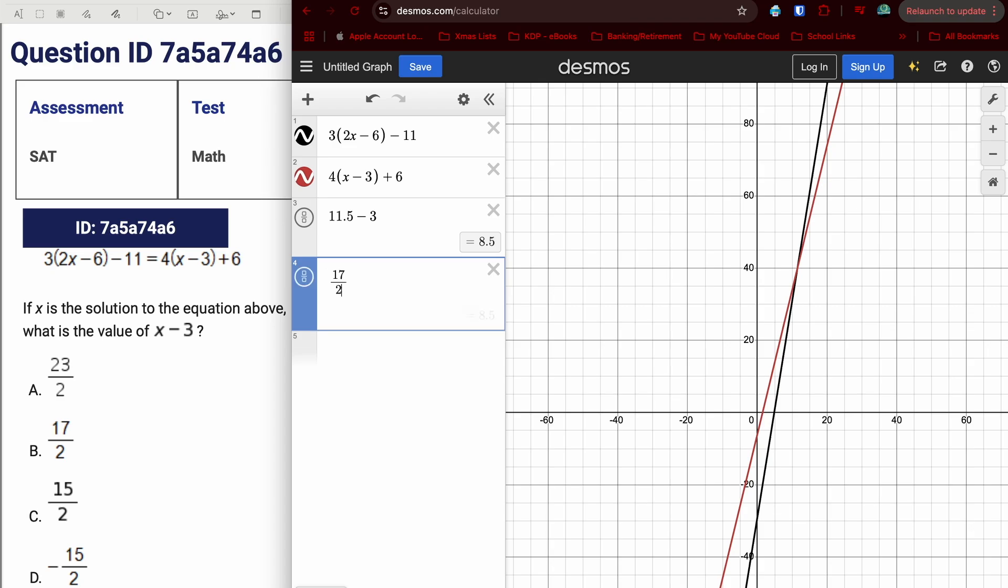That real easy for most people is going to be that 17 over 2. But again, if you weren't quite sure, 17 over 2 and then it shows you yes that is 8 and a half.